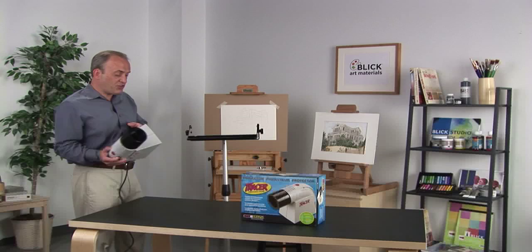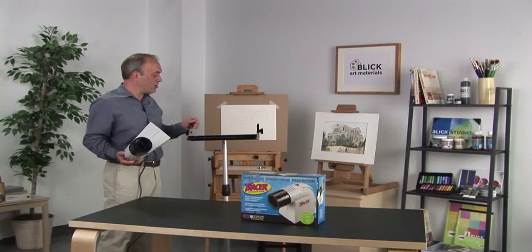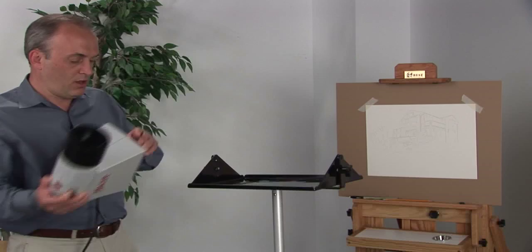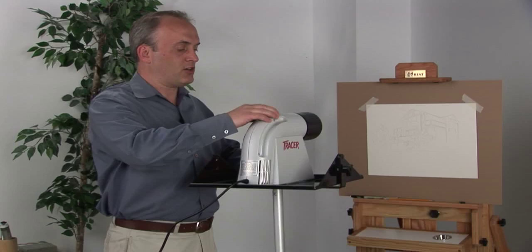The way to use this projector, because it's a bottom feed projector, is to place the artwork that you want to enlarge down onto a work surface. Here we're using the Artograph mobile floor stand. You place the projector down on top of the artwork and then turn the light switch on here at the top.